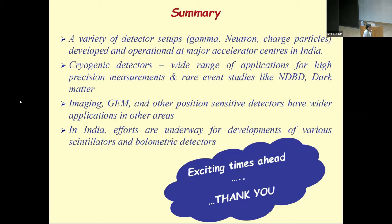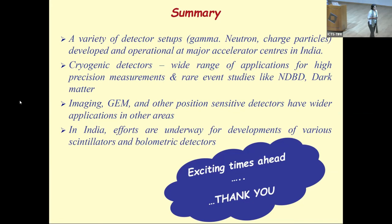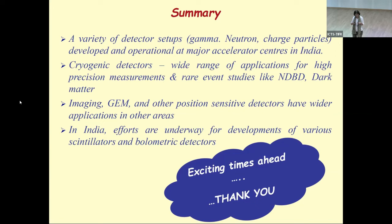Q&A: On the low background germanium setup — with an array of a few detectors, neutrinoless double-beta decay to excited states can be studied. A feasibility study for four detectors was done. An interesting case is zirconium-96 single beta decay, which is spin-forbidden, at about 500 meters depth. On cryogenic bolometer resolution: the current tin bolometer targets 2.28 MeV for ¹²⁴Sn double-beta decay endpoint, currently achieving resolution comparable to a silicon detector, with improvements in progress.